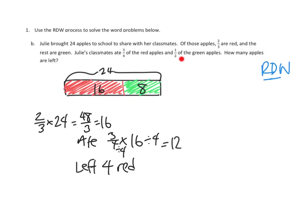They ate half of them. That's really pretty straightforward. So on the green side, they ate one-half of 8. That's 4. So that means that when they ate 4, they must have left 4 green apples.